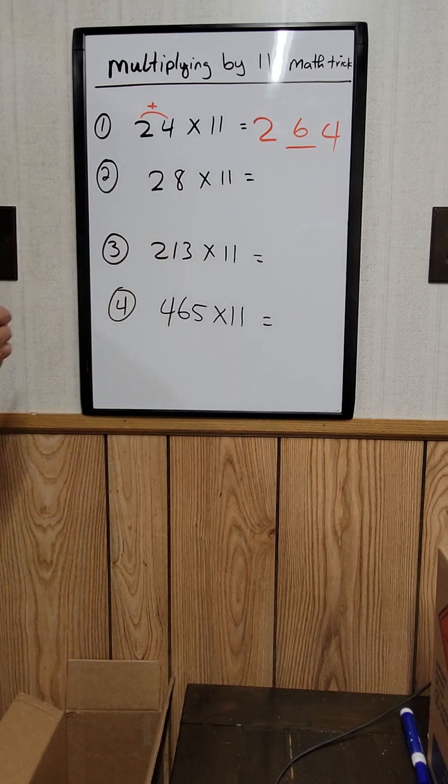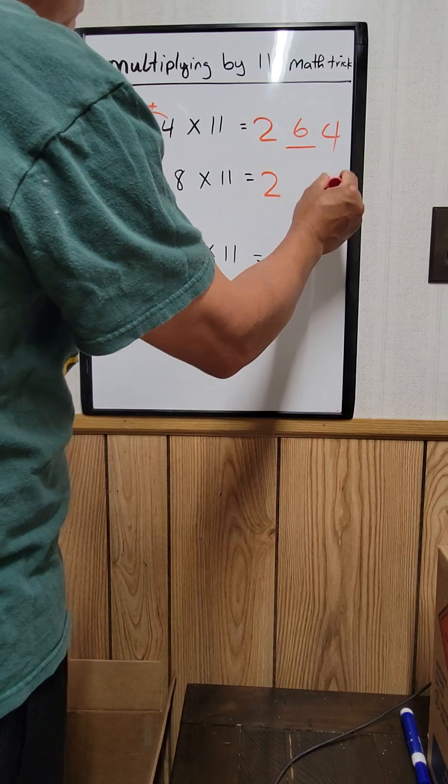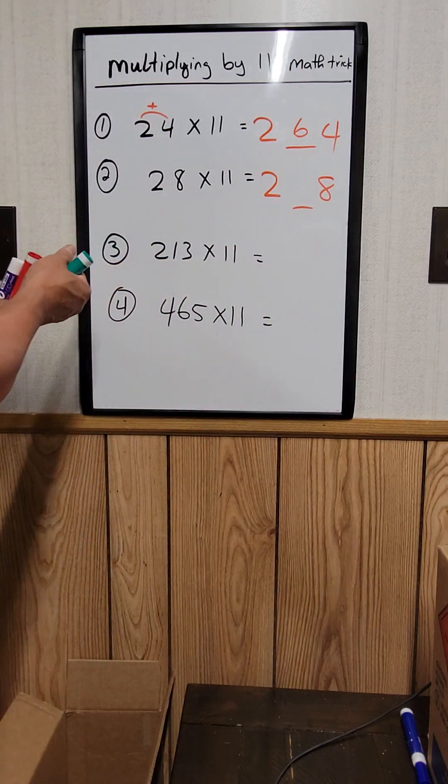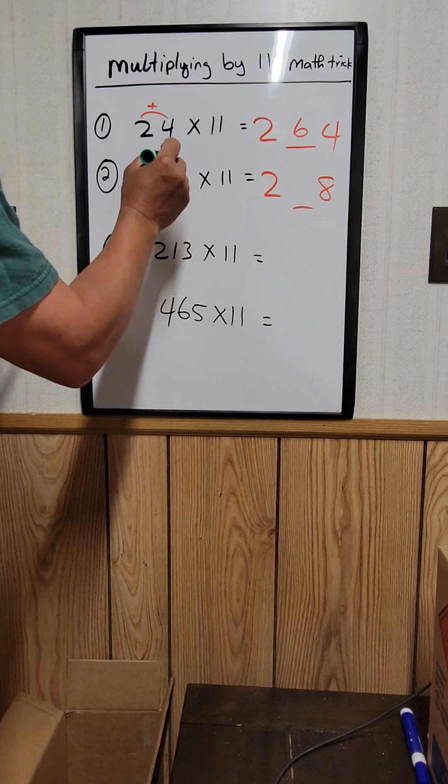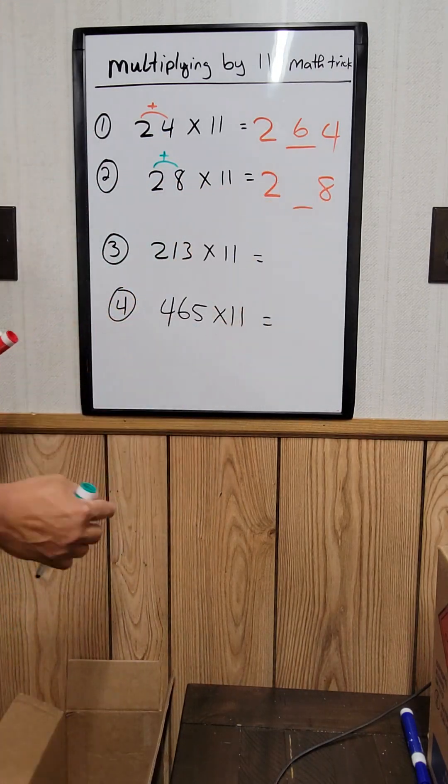How about this one? The same, 28 times 11. The same thing. You write the 2 and the 8 right here. So the middle number, all you need to do is just add this 2 up right here. Okay, so that's equal to 10. Equal to 10.